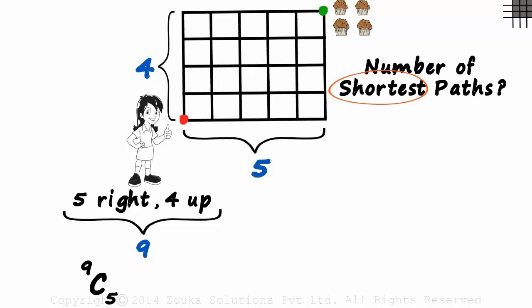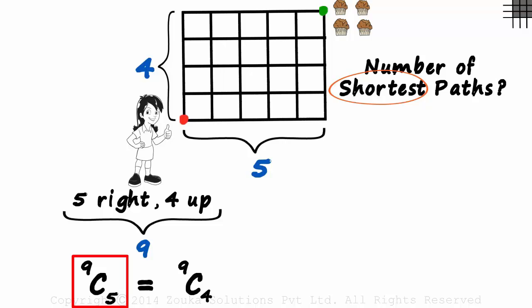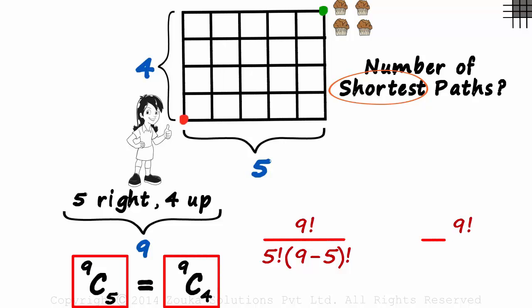Wait — can we also say that out of the nine units Zara takes for the shortest path, four have to be upwards? Yes, 9C4 will also give us the same answer. These two will be equal. In case you are unable to recollect, the formula for NCR is N factorial divided by R factorial times (N minus R) factorial. This equals 9 factorial divided by 5 factorial times 4 factorial, and also 9 factorial divided by 4 factorial times 5 factorial — same answer.